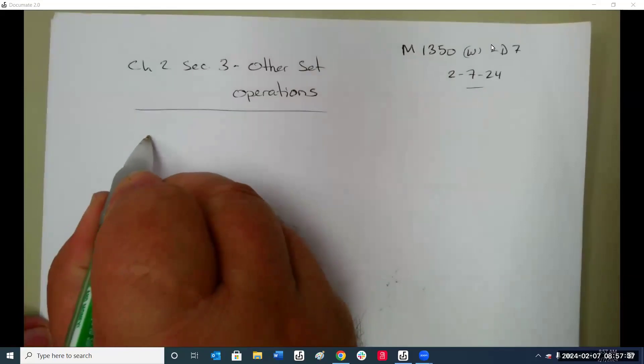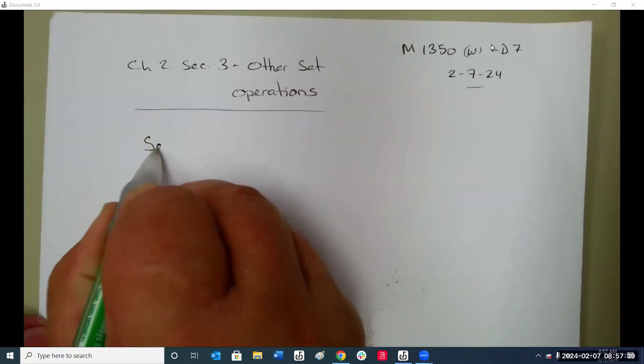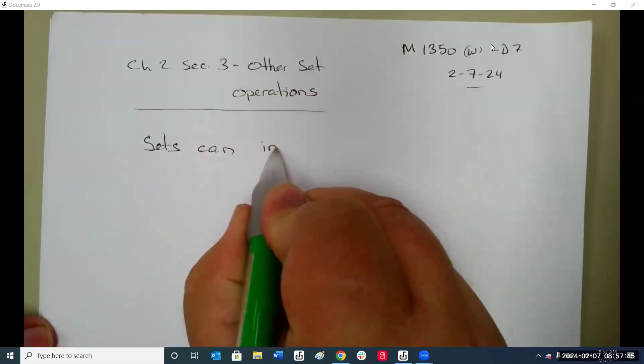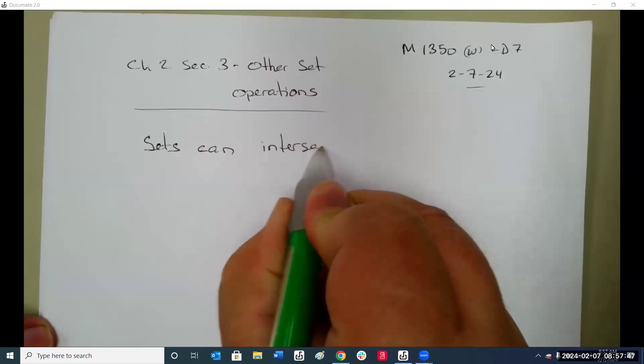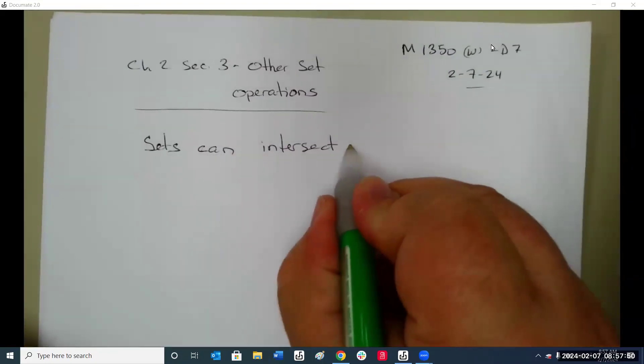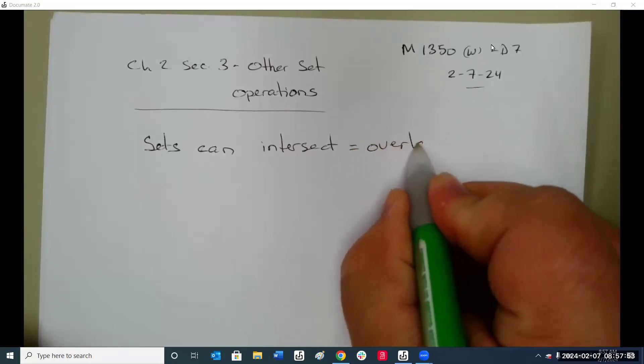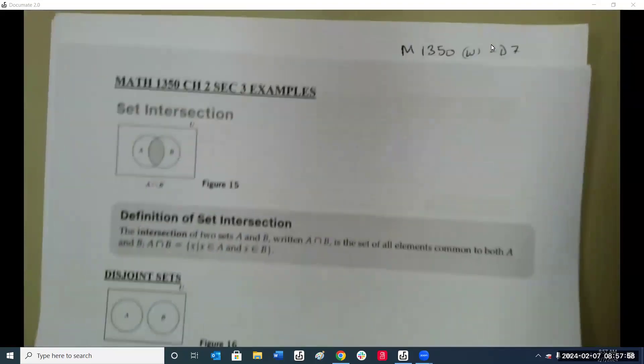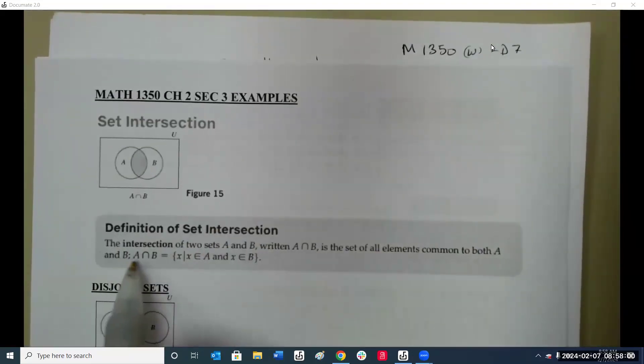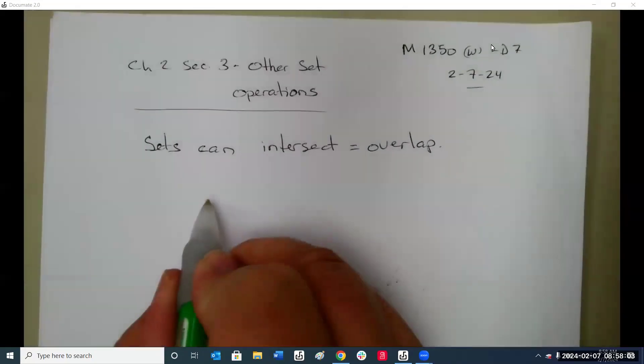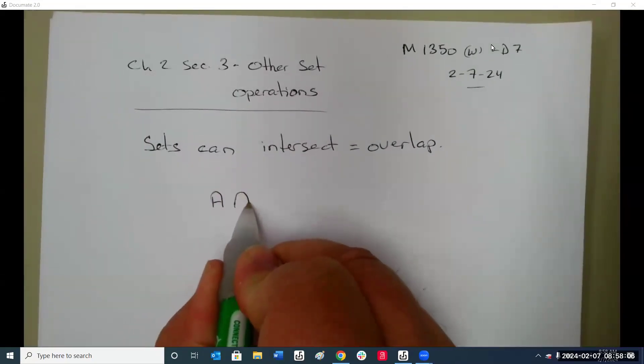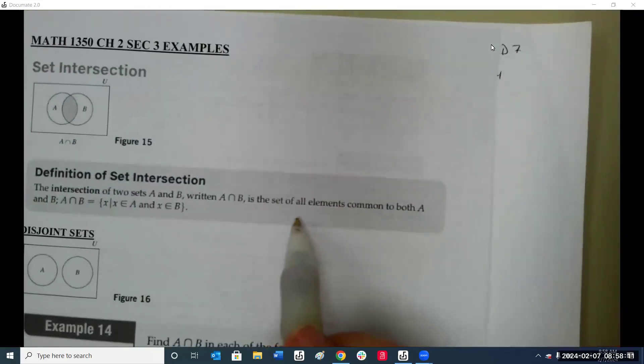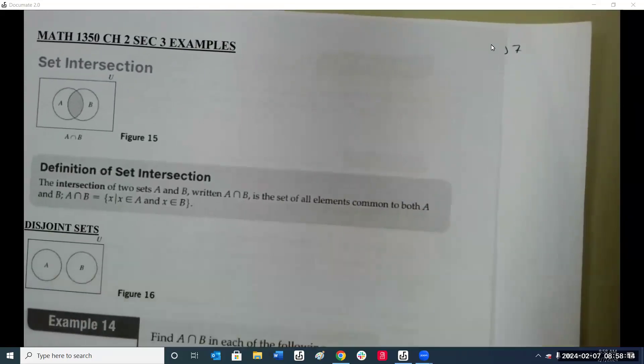The first one we get is sets can intersect, which means they can overlap. The intersection of two sets A and B, written as A intersect B, is the set of all elements common to both A and B.